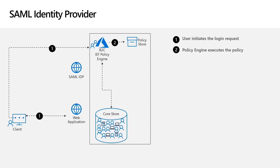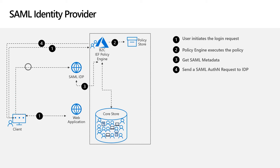The B2C policy engine looks up the policy to determine what the user journey should look like. As part of the user journey, B2C will be configured to use an external SAML identity provider for authentication. Part of that configuration will be the identity provider's metadata, either set statically or via a metadata URL. B2C then retrieves the SAML metadata from the identity provider, if required, and the metadata contains where to send the SAML authN request and how it should look — for example, whether it should be signed.